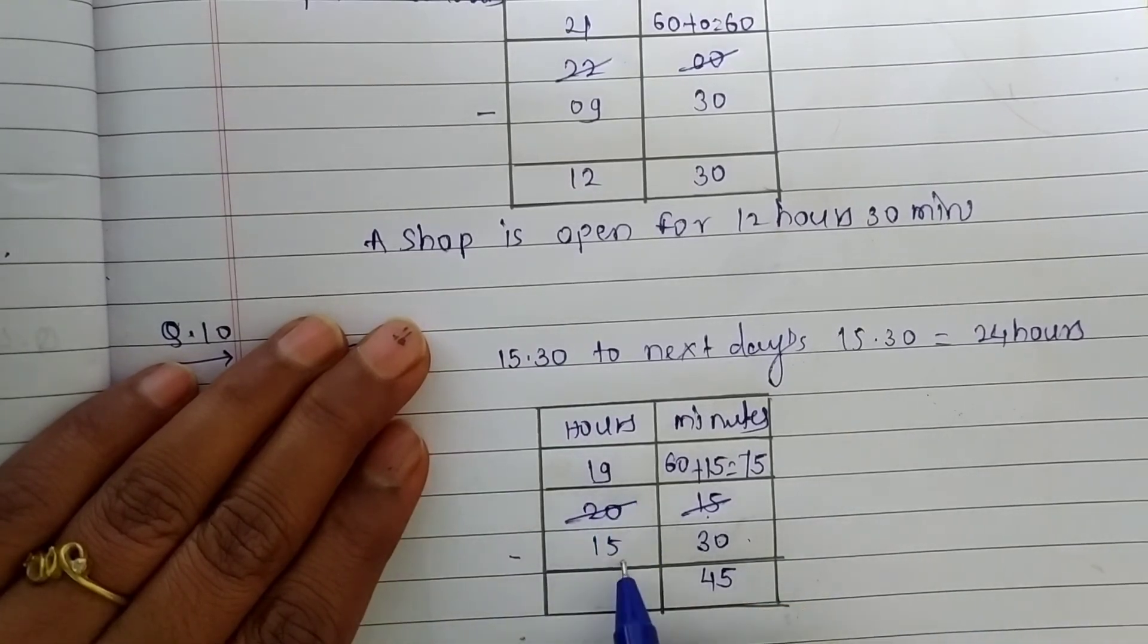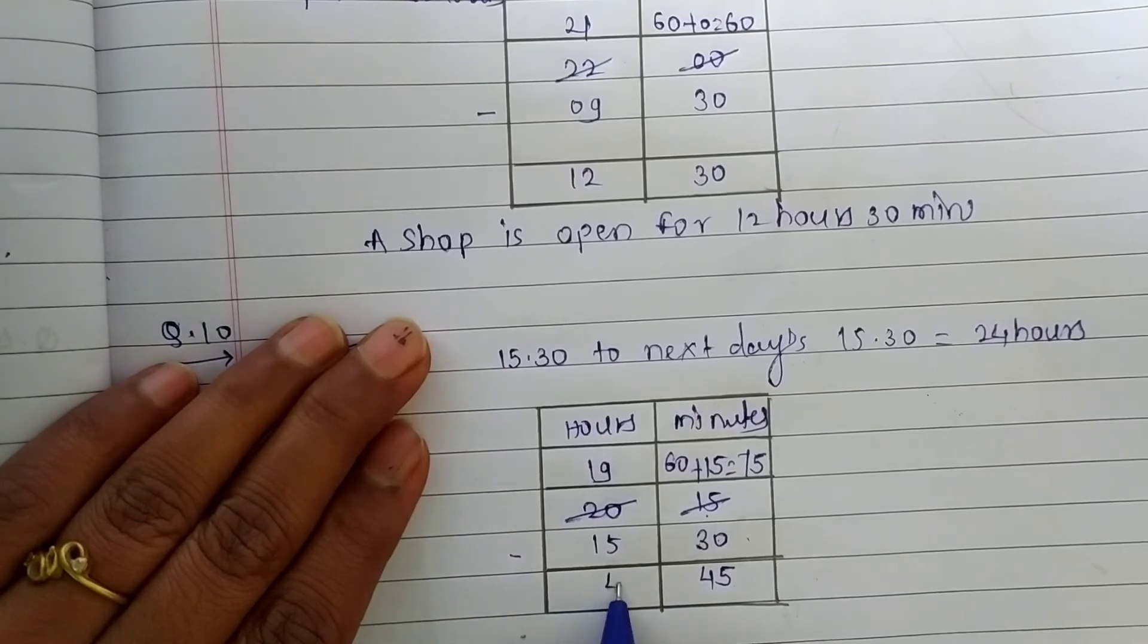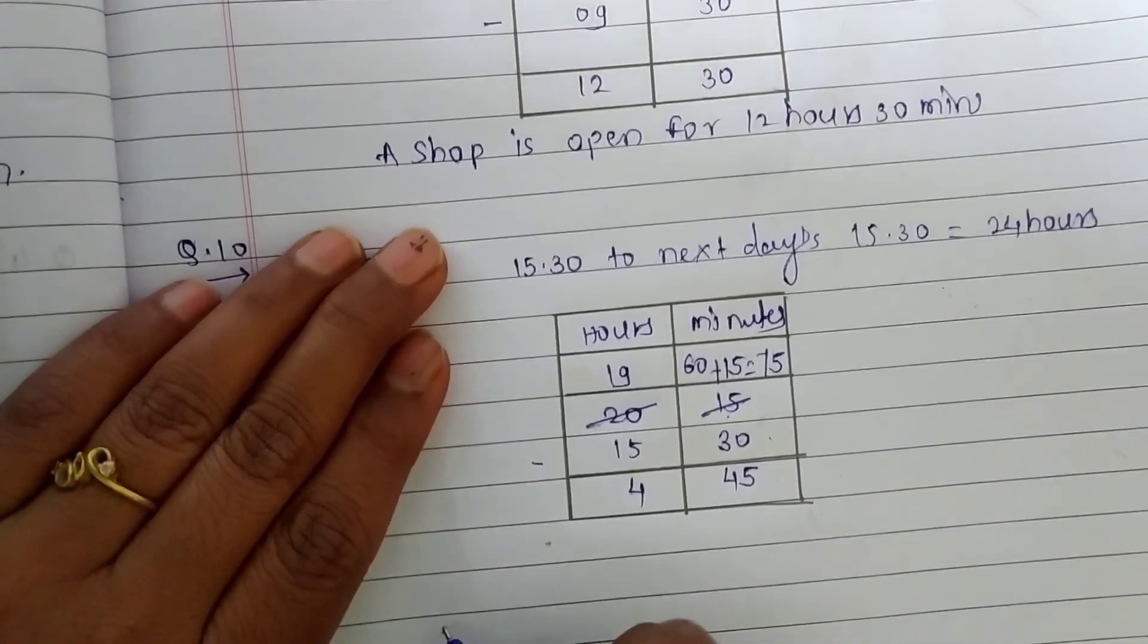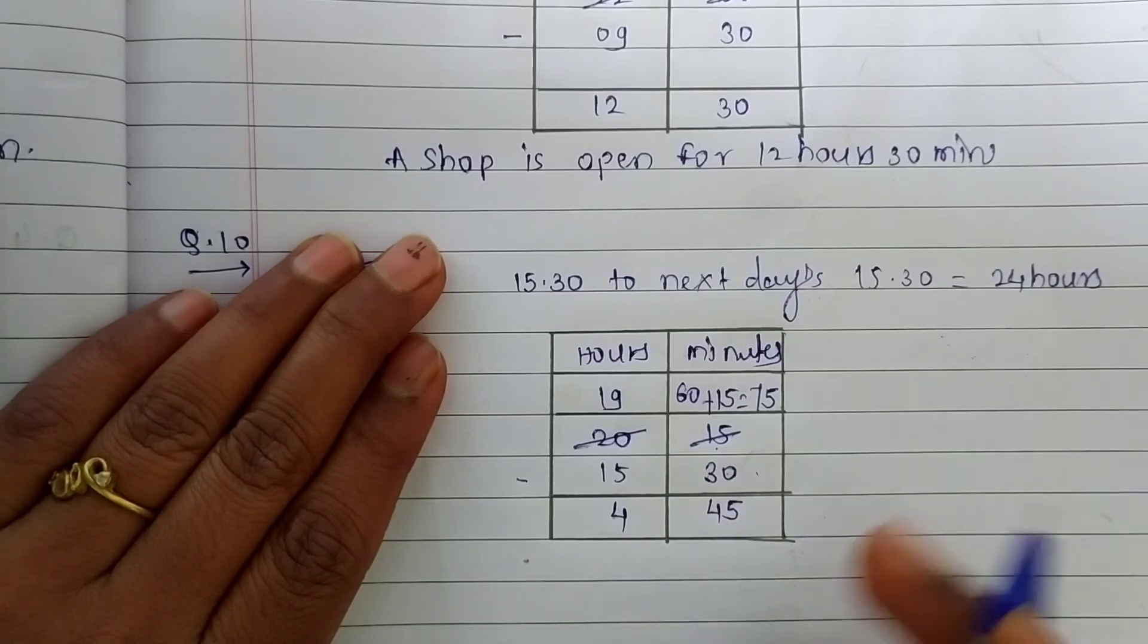Now, 19 minus 15. It's 4. Now, from 15:30 to 20:15, we have 4 hours and 45 minutes.